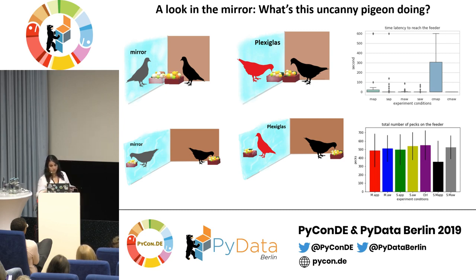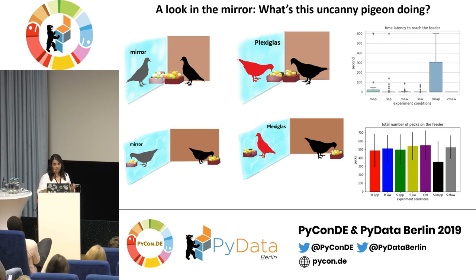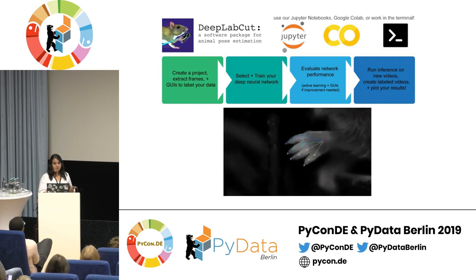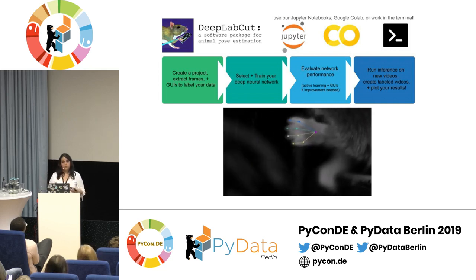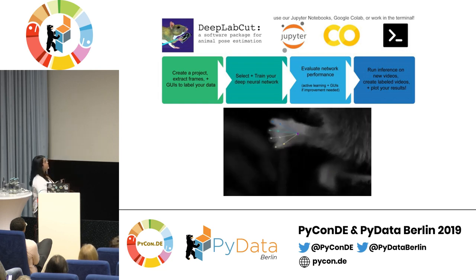To publish something it's not enough to just show two conditions like time latency or total peck count — you have to show different behavioral criteria. Our pigeons didn't show any aggressive or particularly interesting behavior that we would observe in different animals, so we decided to use deep learning with our pigeons. We used the open-source program DeepLabCut.